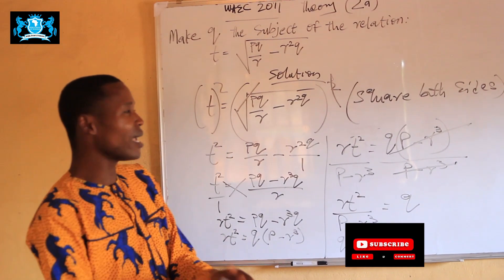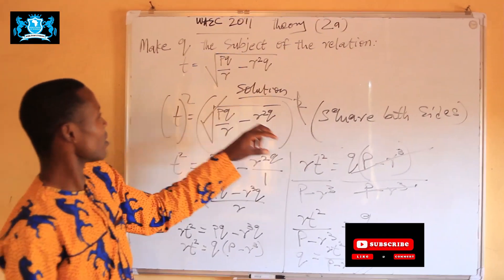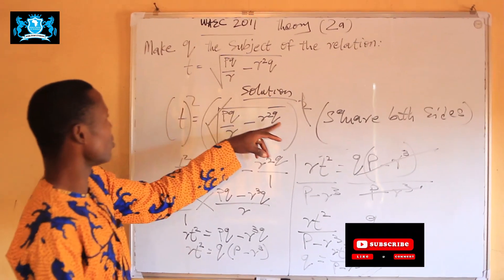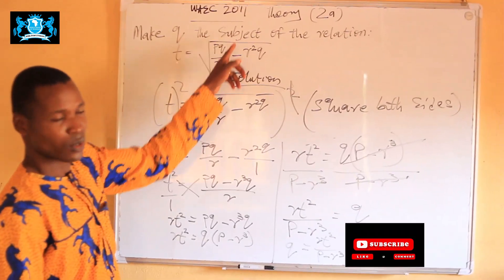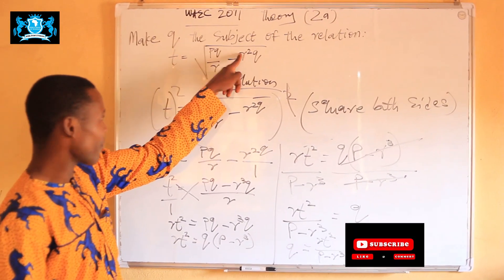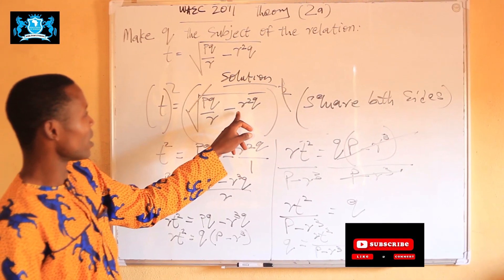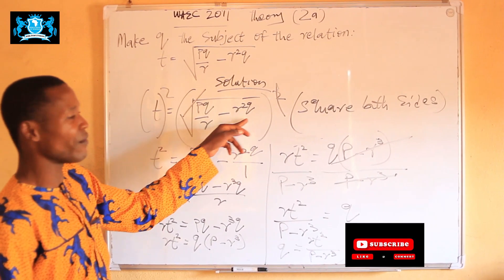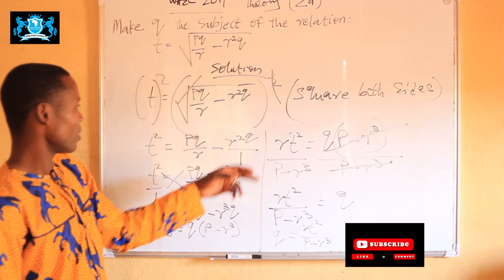Remember what we did? We just square root to remove this. We just spread both sides to remove this. After we did that, we made this one have the denominator by putting one here.